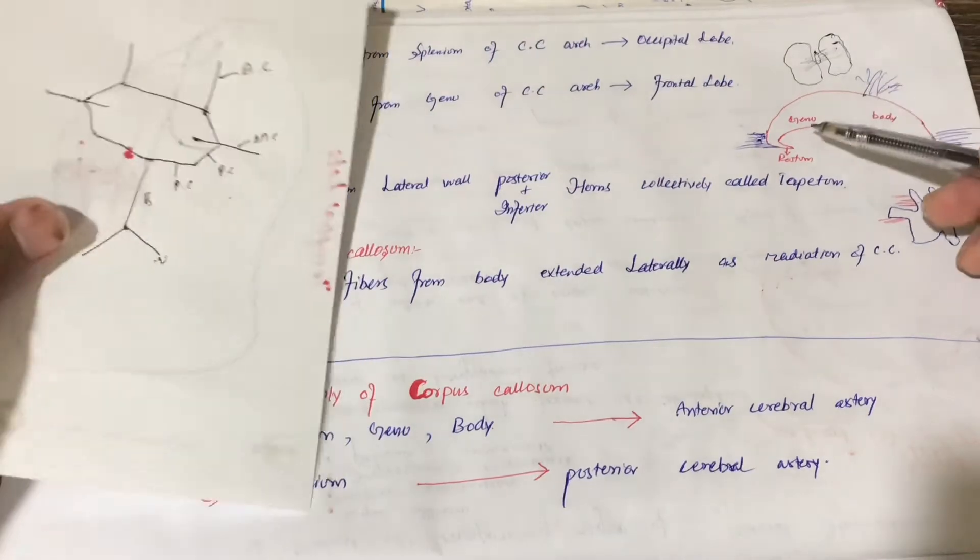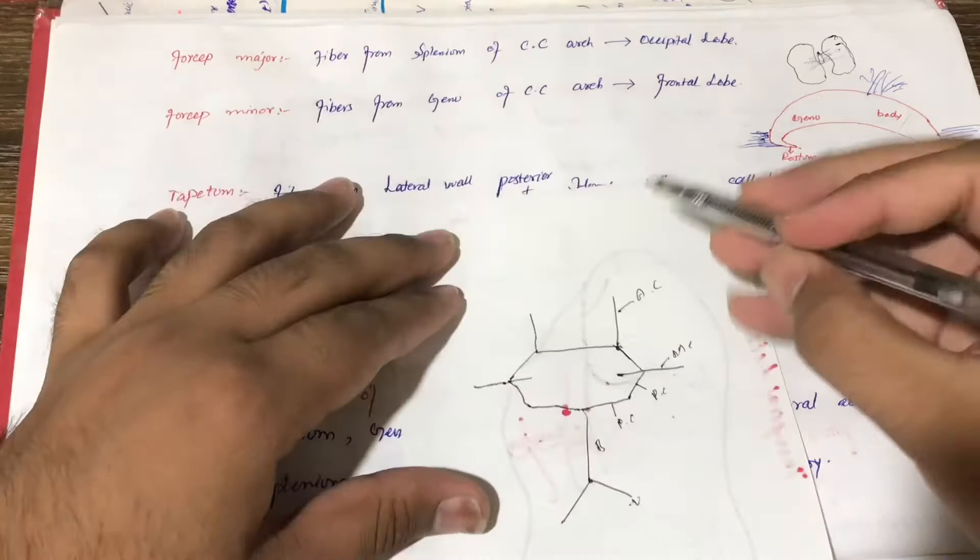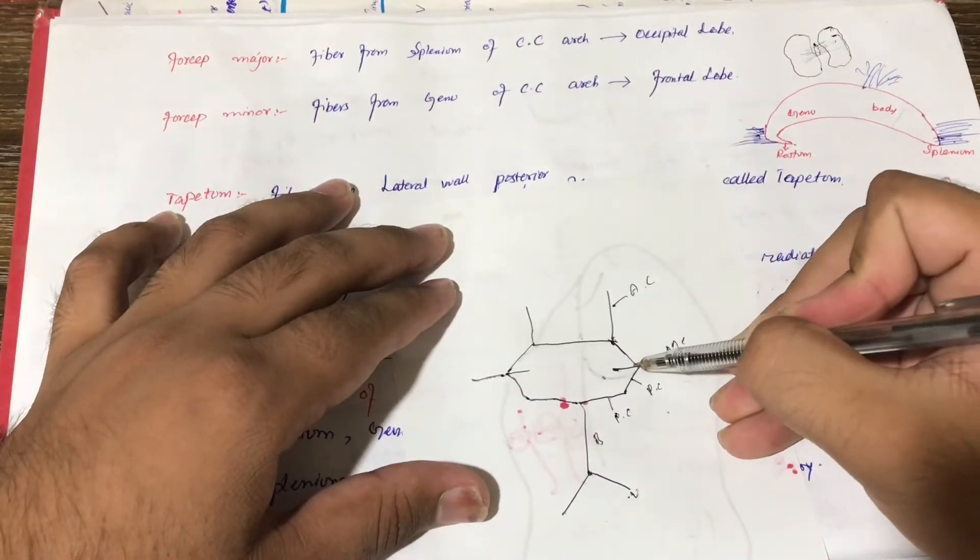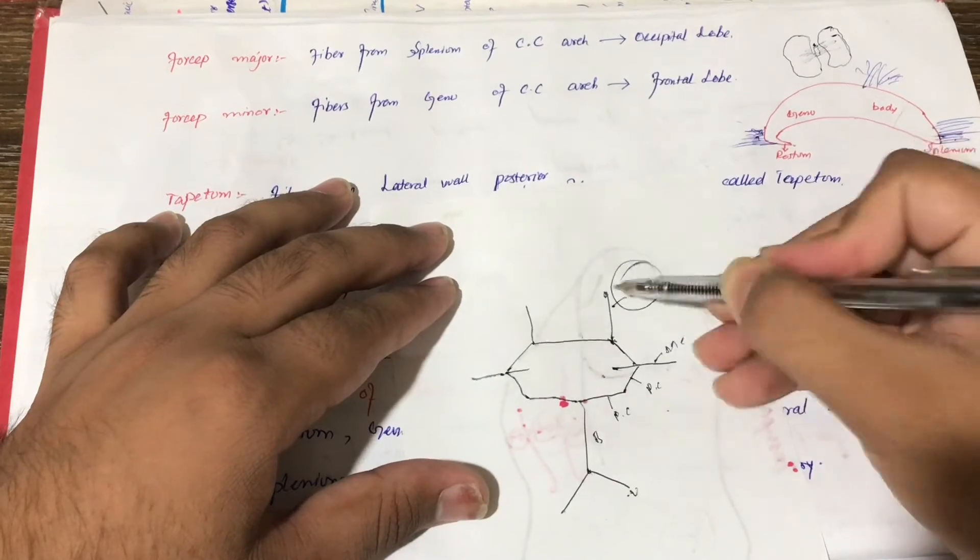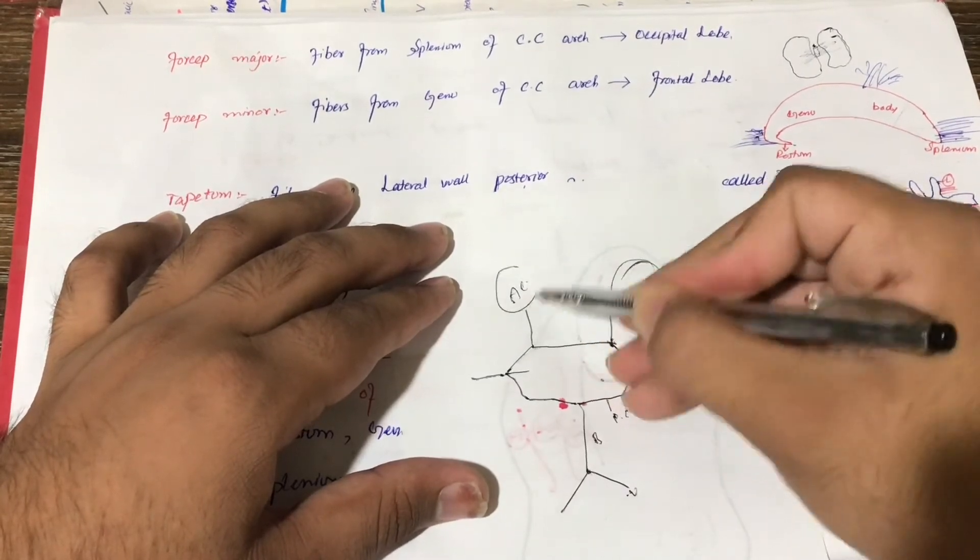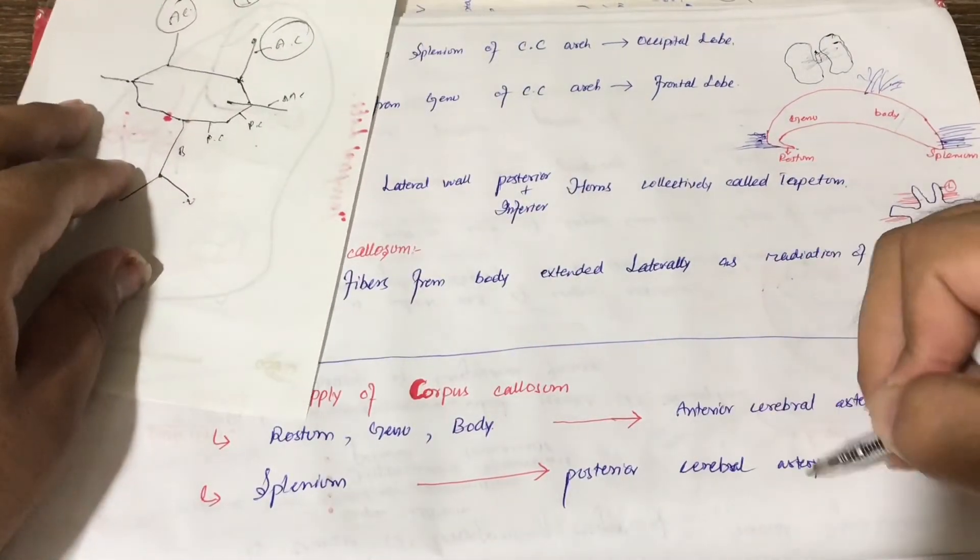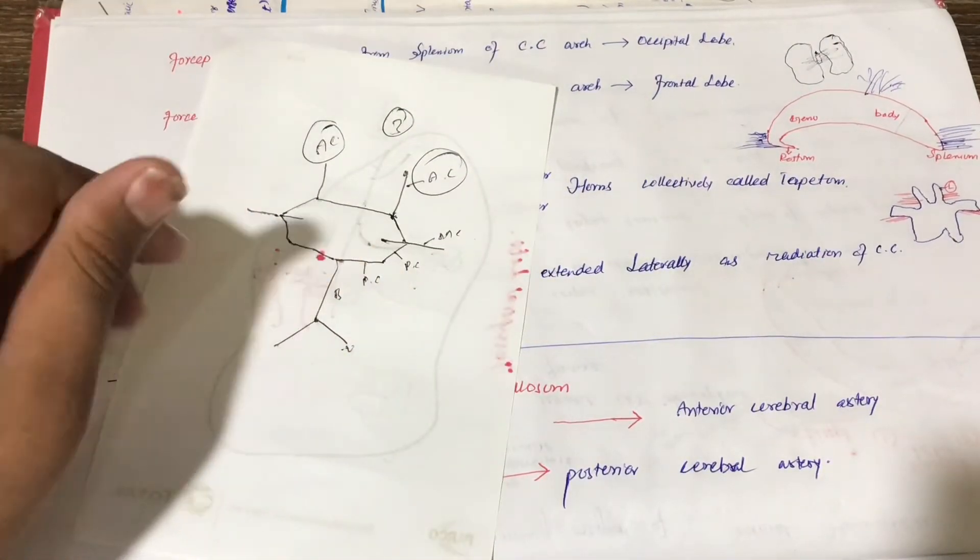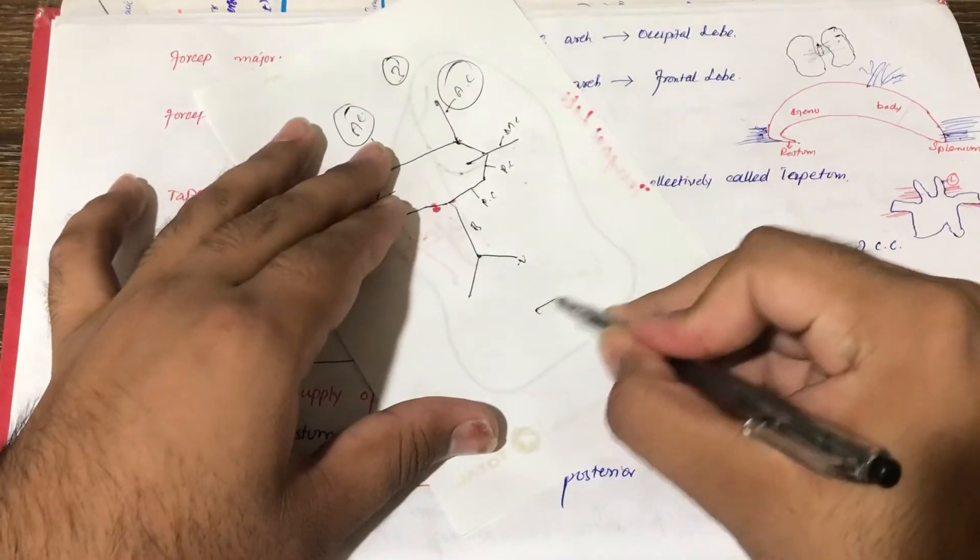The next part is posterior cerebral artery, that is the splenium part. Posterior cerebral artery which I would show you if I draw a simple pyramid.